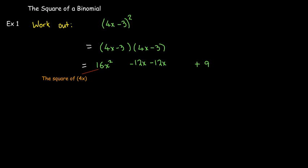In the middle, I have two identical terms. And that's the product of 4x and negative 3. So the first term times the second term, we have that twice. And then the last term is the square of the last term, negative 3. And so that gives me a nice pattern that would help me remember how to do this.